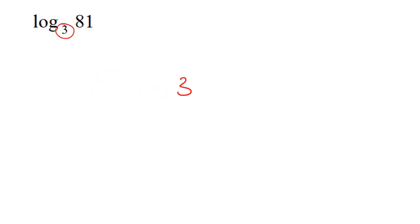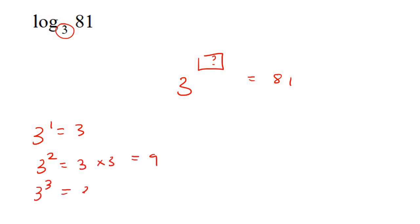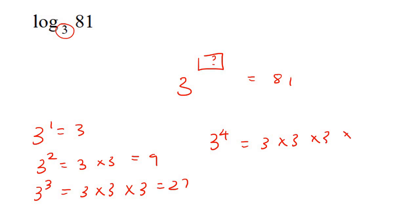Try this one yourself: 3 to the power of what number gives you 81? So 3 to the power of 1 is 3; 3 to the power of 2 is 3 times 3, which is 9; 3 to the power of 3 is 27; and 3 to the power of 4 is 3 times 3 times 3 times 3, which is 81. So this would be 4 as our answer.